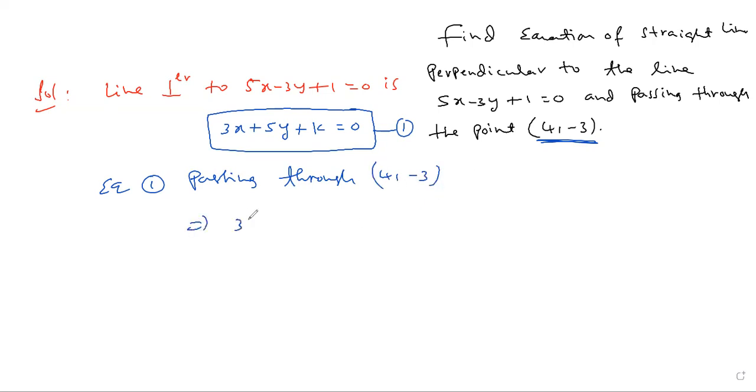That implies substitute: 3 into 4 plus 5 into minus 3 plus k. 12 minus 15 plus k is 0.